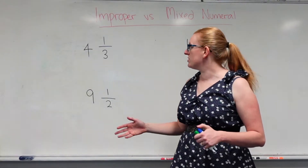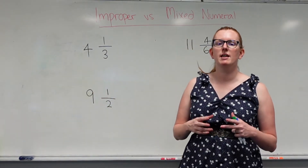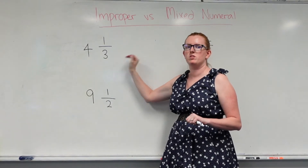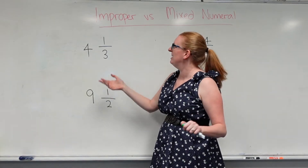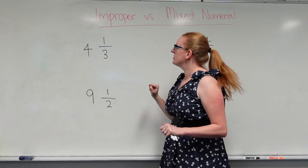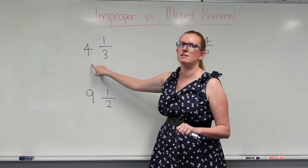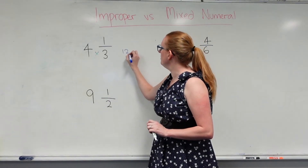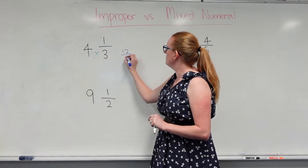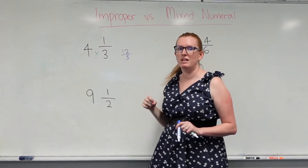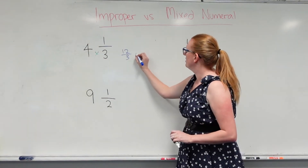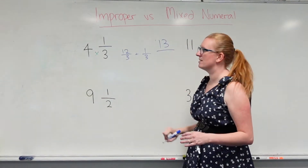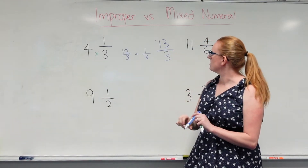Now we want to turn mixed numeral fractions into improper fractions — so it ends up being just a plain fraction with a big number on the top. Here I've got four and one over three — four whole pizzas plus another third. I need to figure out how many slices were in those four whole pizzas, so I'm going to multiply these two numbers together. Four times three gives me twelve, so there were twelve slices — twelve over three — in those four whole pizzas I ate, plus I ate another third. So all up I ate thirteen slices cut into threes: thirteen over three.